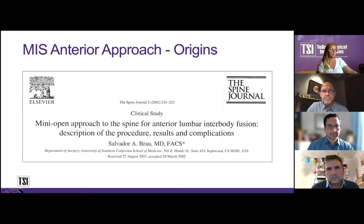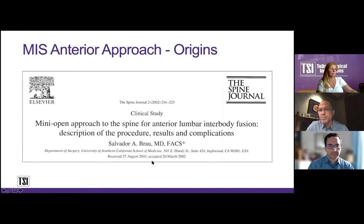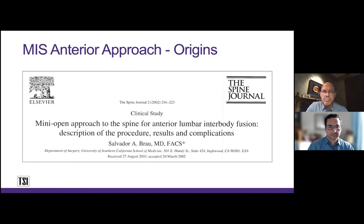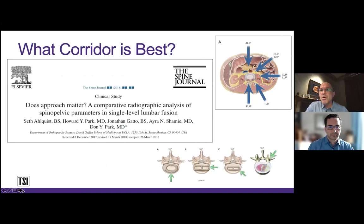This is probably the pinnacle article in this world of anterior spine surgery — you should read it. Sal Brown, now retired, had a very big impact on anterior spine surgery. The question always is: what's the best corridor to the spine? I think anterior spine surgery is going to be positioned as the best approach to reestablish sagittal alignment and get the lordosis you want. You get the best, largest implants, but there are a lot of different corridors to the spine.